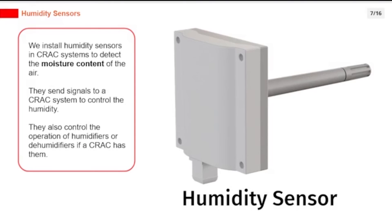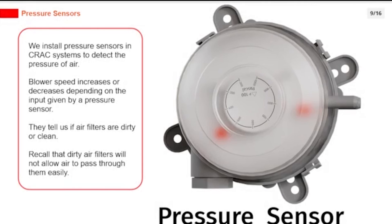Humidity sensors are installed in CRAC systems to detect the moisture content of the air. They send signals to control humidity and also control the operation of humidifiers or dehumidifiers if the CRAC has them. Pressure sensors are installed to detect the pressure of air; blower speed increases or decreases depending on the input from a pressure sensor, and they also indicate whether air filters are dirty or clean.